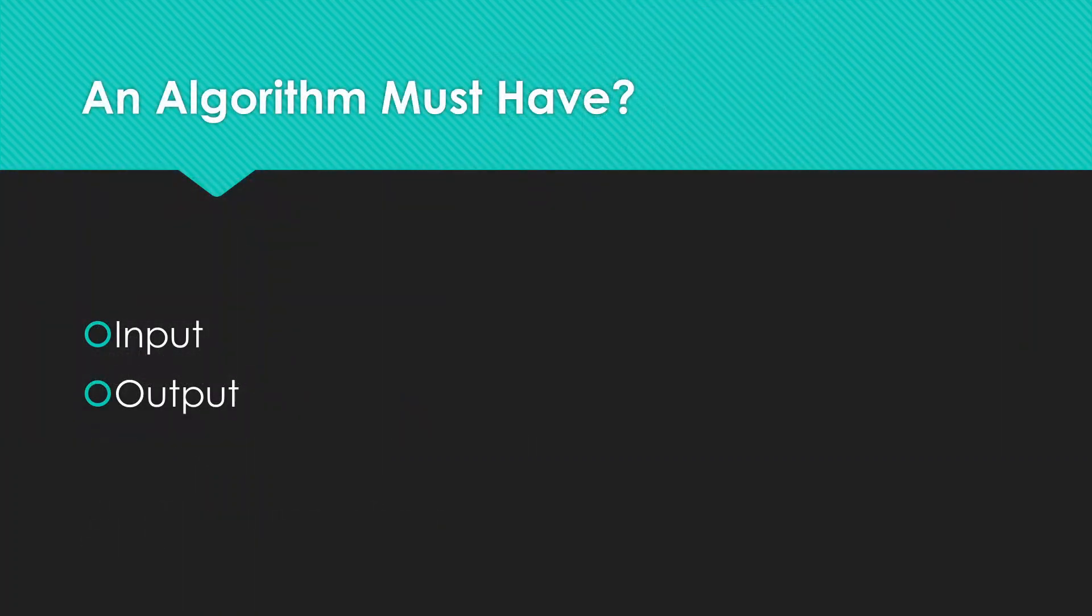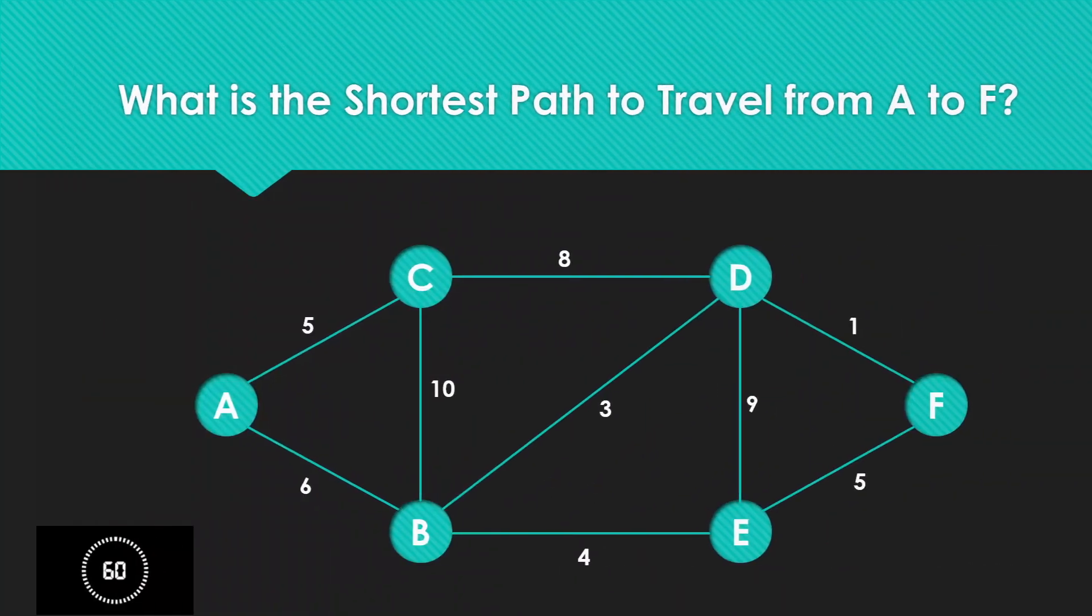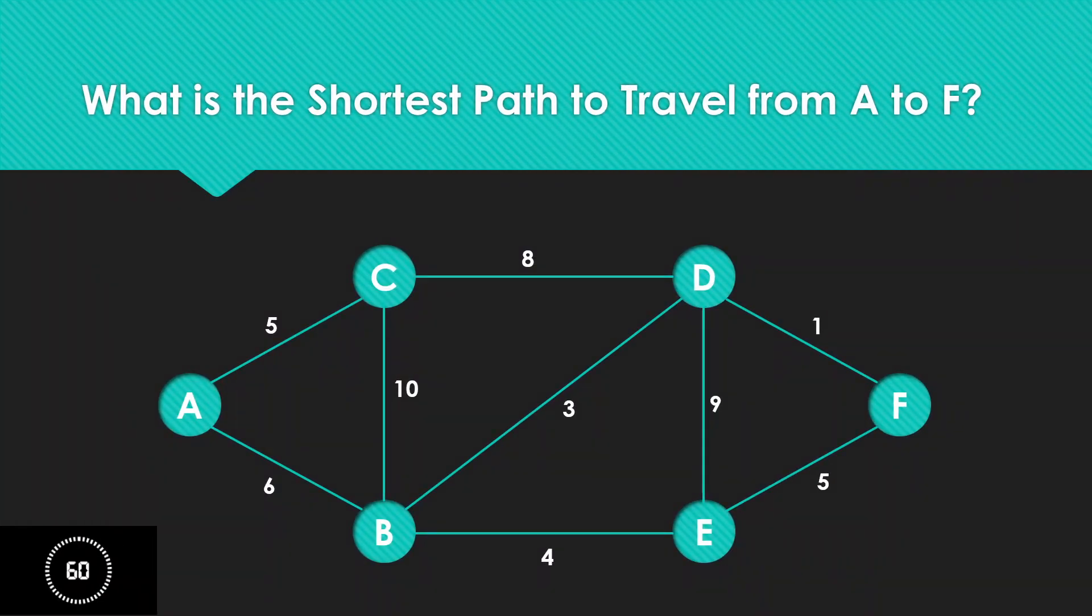Now an algorithm must have zero or more inputs. So that is important that the inputs can be zero or more. Then an algorithm of course must have an output. So these are the two other characteristics of an algorithm: must have zero or more inputs and must also have some output.